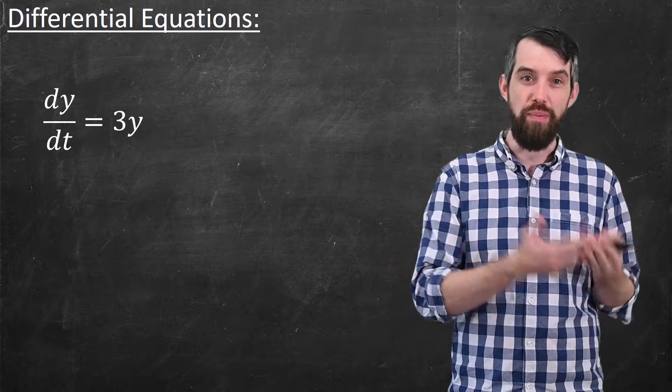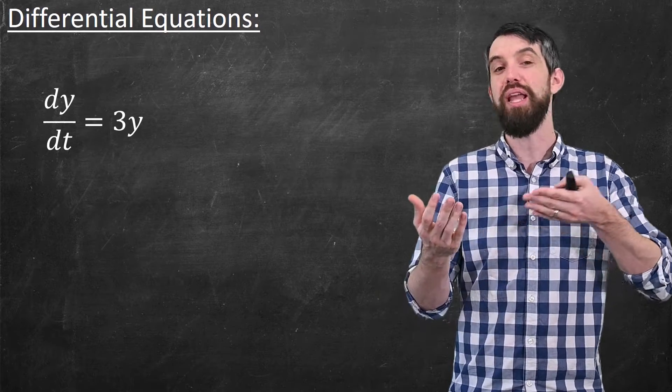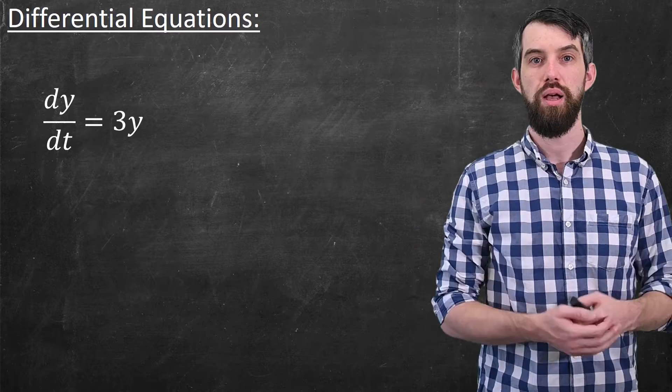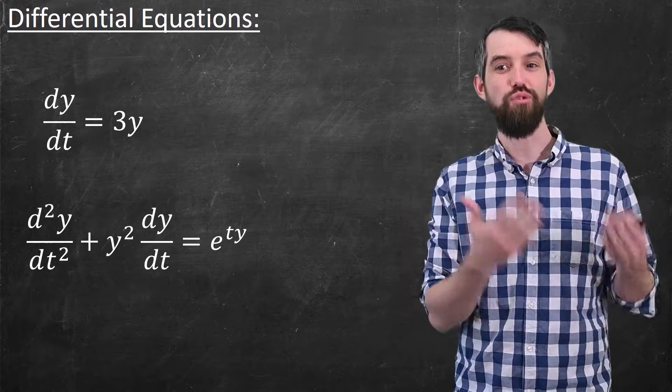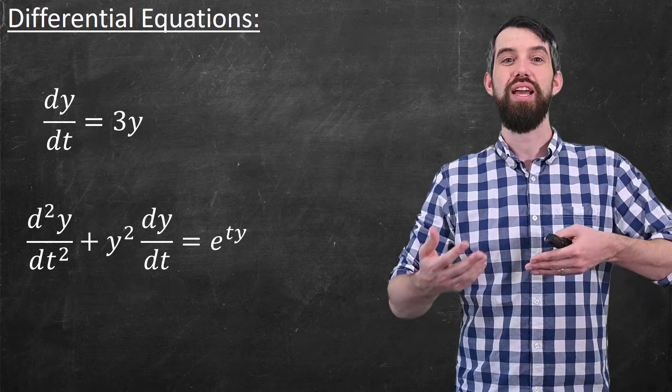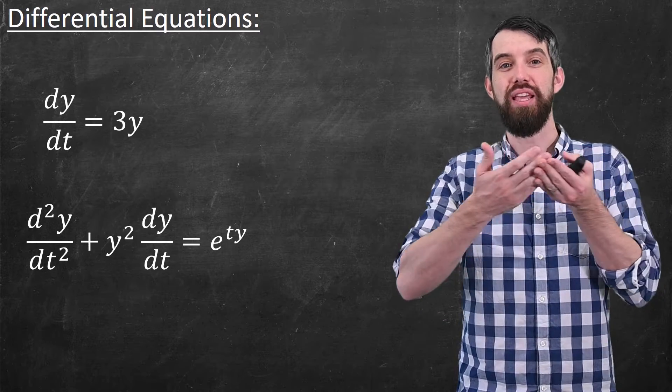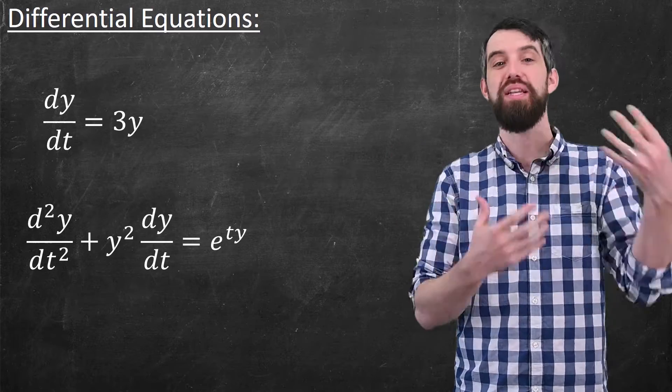A normal equation might relate an independent variable and a dependent variable, but it wouldn't have derivatives in them. A more complicated example could look something like this. It might have second derivatives, first derivatives, the dependent variable y, and the independent variable t, be all mixed together.